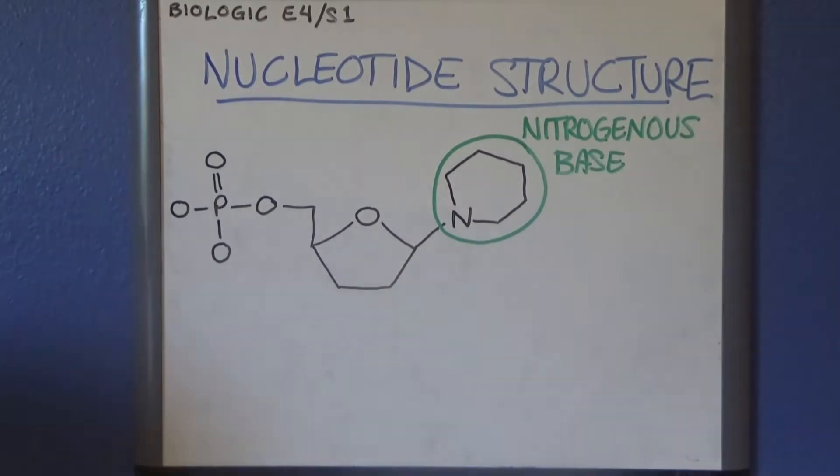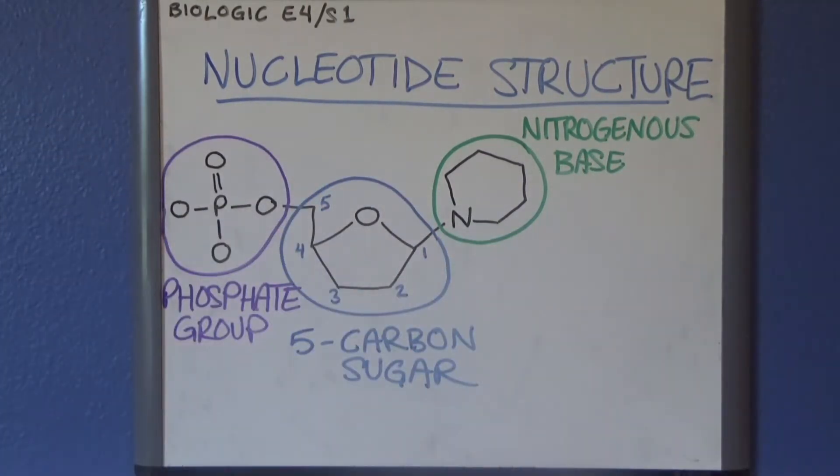Every nucleotide is composed of three basic parts: a 5-carbon pentose sugar, a phosphate group, and a nitrogenous base. The 5-carbon sugar takes the form of a pentagon made from 4 carbon atoms and 1 oxygen atom. The 5th carbon atom is not in the pentagon itself. Instead, the 5th carbon is connected to a carbon atom in the pentagon that's immediately adjacent to the oxygen atom, so it just kind of juts sideways out of the ring.